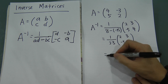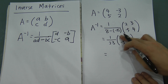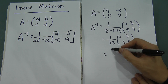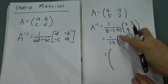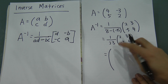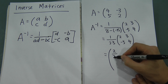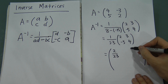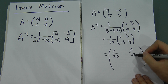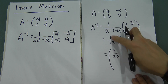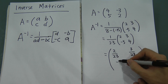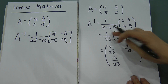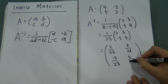After that, the matrix still stays as [2, 3, negative 5, 4]. You just multiply 1 over 23 to all of these values. So you get 2 times 1 over 23 equals 2 over 23, 3 times 1 over 23 equals 3 over 23, negative 5 times 1 over 23 equals negative 5 over 23, and 4 times 1 over 23 equals 4 over 23.